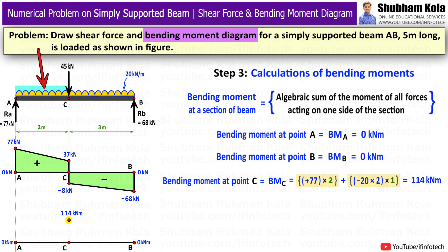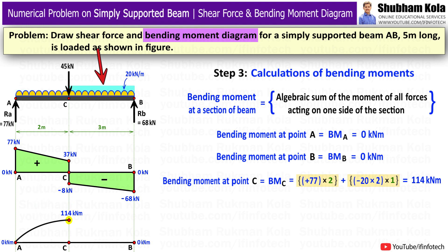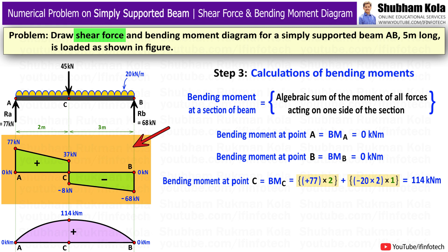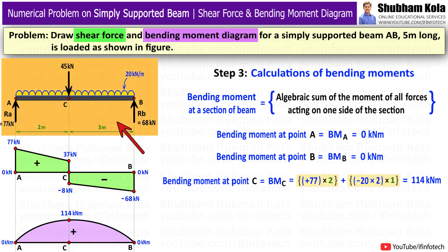Between point A and point C there is UDL, so I join these two points with a parabolic curve. Between point C and point B there is also UDL, so I join those two points with a parabolic curve. Since the bending moment diagram is drawn above the reference line, I show this portion with a positive sign. The shear force diagram and bending moment diagram for this simply supported beam are now complete.